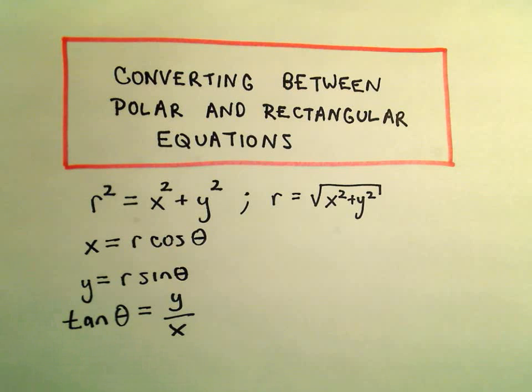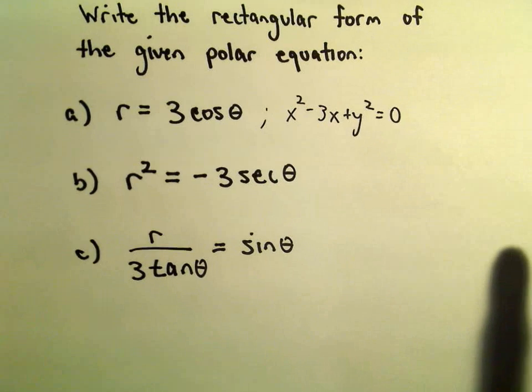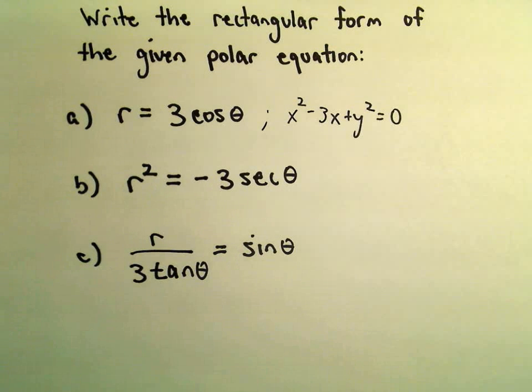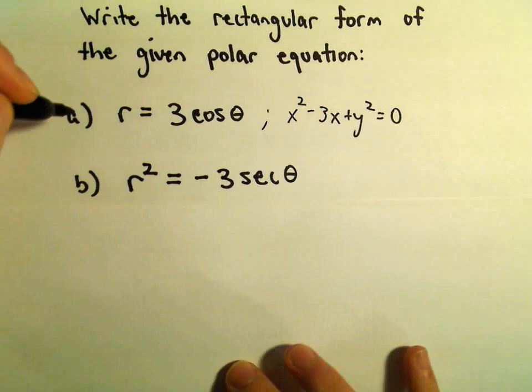Alright, in this video we're going to do another couple examples of going from polar form to rectangular or Cartesian form. So here we've got r² = -3sec(θ).